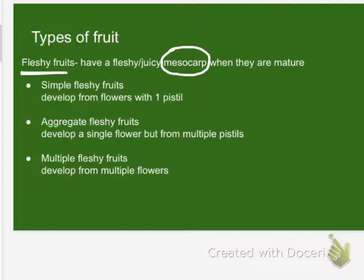It's the nice, fat, juicy part of the fruit. So there are three different kinds of fleshy fruits. We're going to probably just talk about simple ones today: simple, aggregate, and multiple.